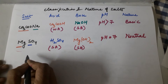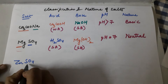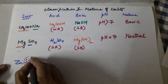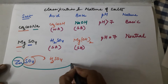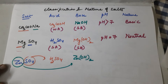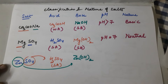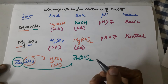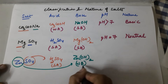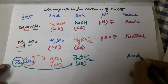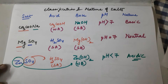Third example: zinc sulfate, ZnSO₄. Add H⁺ to sulfate to get sulfuric acid H₂SO₄ — a strong acid. Add OH⁻ to Zn²⁺ to get Zn(OH)₂. Zinc is not a highly reactive metal — it is much lower in the reactivity series than sodium or potassium — so zinc hydroxide is a weaker base. When you have a stronger acid and a weak base, the salt formed is acidic in nature, and the pH is less than 7.